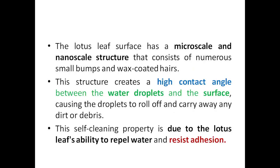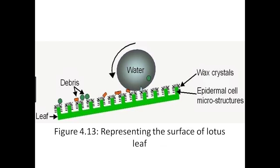The lotus leaf surface has microscale and nanoscale structures consisting of numerous small bumps and wax-coated hairs. This structure creates a high contact angle between water droplets and the surface, causing droplets to roll off and carry away dirt or debris. This self-cleaning property is due to the lotus leaf's ability to repel water.